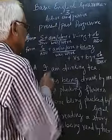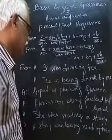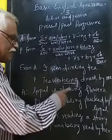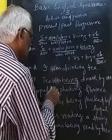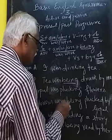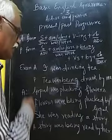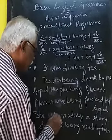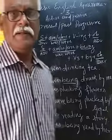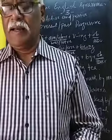Let's change some forms into past progressive. 'I was drinking tea' — in passive: 'Tea was being drunk by me.' 'Gopal was plucking flowers' — in past progressive passive: 'Flowers were being plucked by Gopal.' Now changing to present progressive: 'She is reading a story' — 'A story is being read by her.'